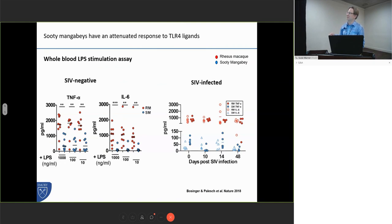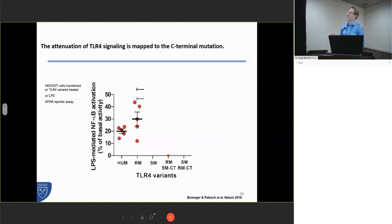We did map the TLR4 mutation to LPS responsiveness, and we found that in the sootys they had a much attenuated response to TLR4 and LPS signaling. When we did a mutation analysis where we swapped in the rhesus tail into the sooty—we swapped in the sooty tail into the rhesus tail into the sooty—we actually were able to recover signaling of NF-kB in HEK 293T cells. So are we able to go from a full genome down to an actual mutation and map the activity?